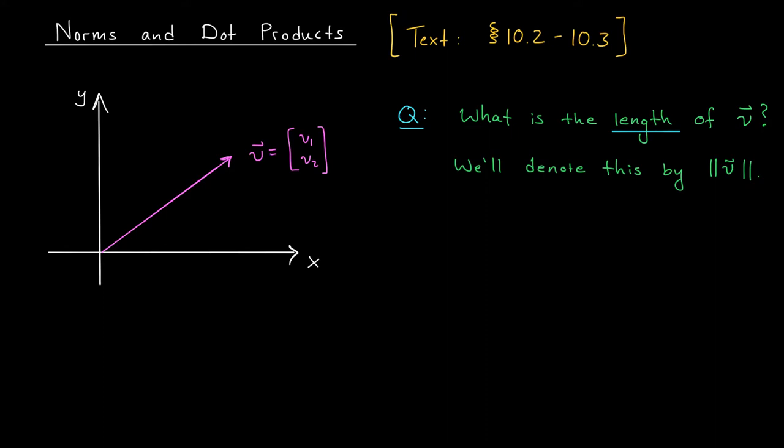To start off our discussion, I have the following question for you. Suppose that I give you a vector in R2, with components V1 and V2. We think of that vector like an arrow emanating from the origin. The question is, what's the length of that arrow?